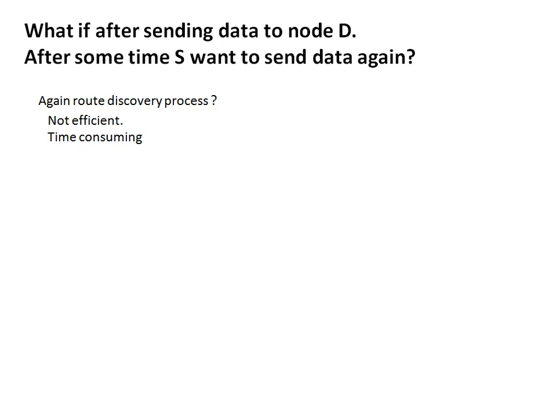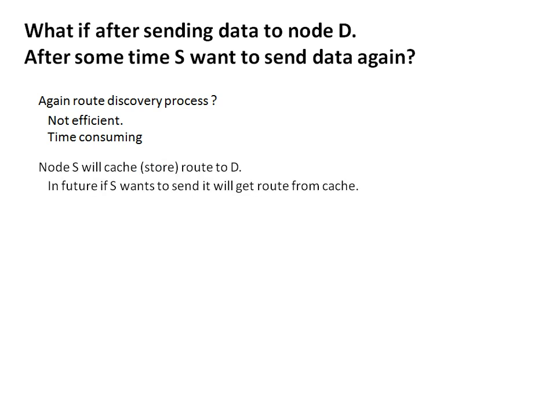Now consider that S has delivered its packet to D, and after a few seconds S wants to send more data to D. If S starts the route discovery process again, it will consume the same time and is not efficient. One solution is for node S to store the route for some time so it can be used in future. This feature is known as route caching. The route is stored, so the next time S wants to send data to node D, the cached route can be used.